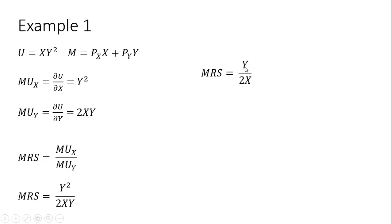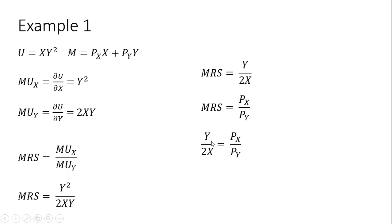The marginal rate of substitution simplifies to y divided by 2x — we had two y's in the numerator and one in the denominator. Setting the MRS equal to the price ratio p_x over p_y and solving for y by multiplying both sides by 2x, we get the income consumption curve.